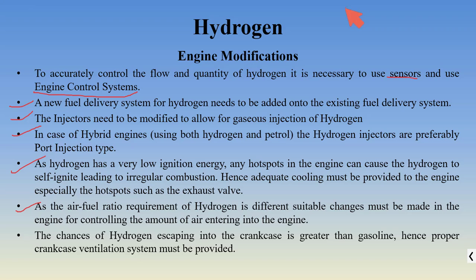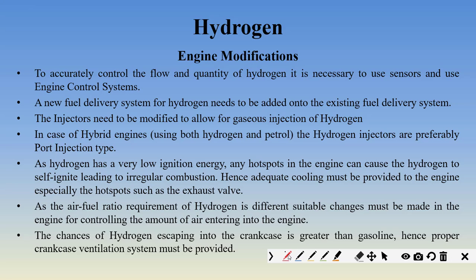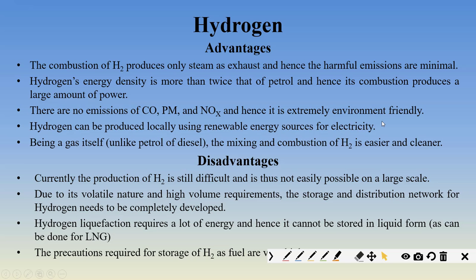Additionally, because hydrogen is so light and small, there is a chance it may pass through the piston rings into the crankcase. Piston rings are supposed to prevent fuel particles from entering the crankcase, but hydrogen's small size means it can slip through. We must prevent this because any fuel that goes into the crankcase is not burnt and is thus wasted.